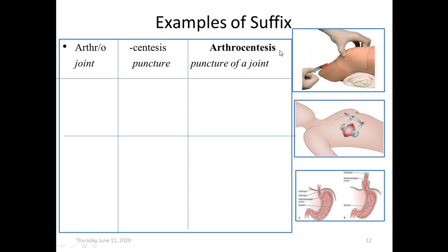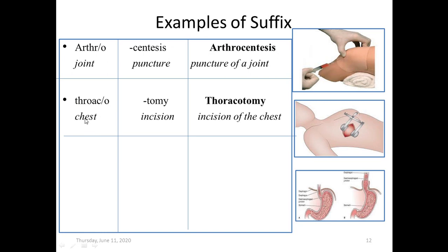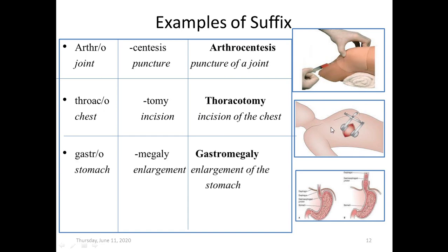'-centesis' indicates puncture to draw fluid from any area containing fluid. 'Thoracotomy': 'thorac' means chest, '-otomy' means incision, combined with a vowel — so thoracotomy means incision of the chest. 'Gastromegaly': 'gastro' means stomach, '-megaly' means enlargement — so gastromegaly means enlargement of the stomach. Similarly we have hepatomegaly or splenomegaly depending on which organ is enlarged.